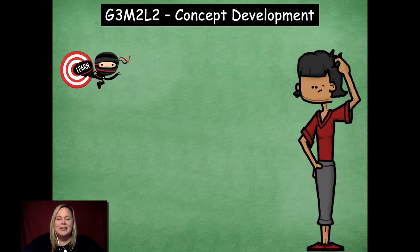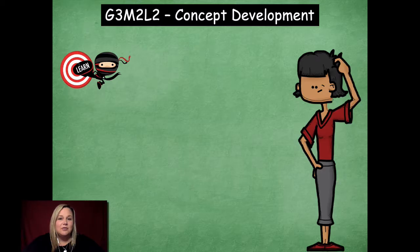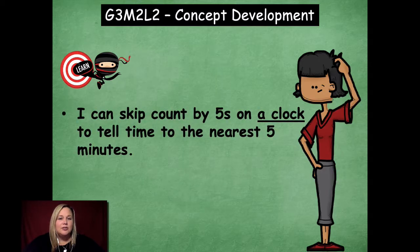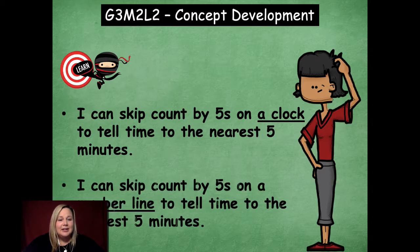Hi friends, it's Mrs. Walker. Today for our lesson we're going to talk about time and using a number line and a clock to find the time and intervals of time. Our learning goals say: I can skip count by fives on a clock to tell the time to the nearest five minutes, and I can skip count by fives on a number line to tell the time to the nearest five minutes.